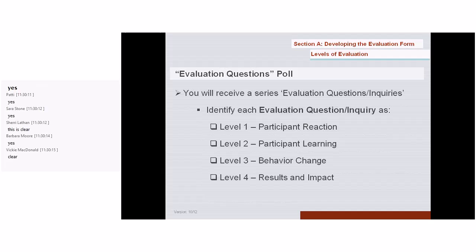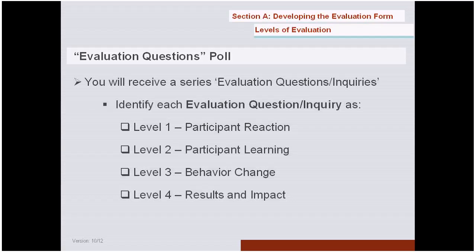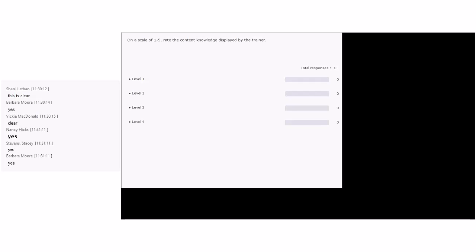Barring any questions, what we're going to engage in now is some polling. We have collected questions from you throughout the modules you've been working in, and from those we've extracted leveled questions. You're going to look at each question and vote on whether you think it is a level one, level two, level three, or level four question. For those who can't see the screen, I will read the question out loud at least once, and then you can still vote. Is everybody clear on what we're going to do? Yes.